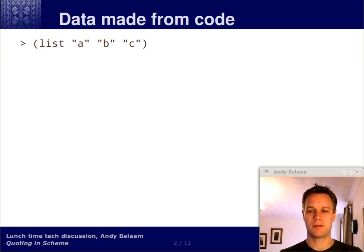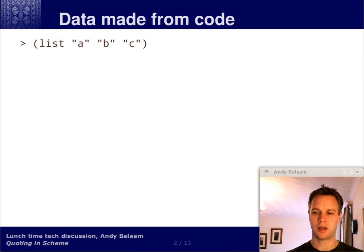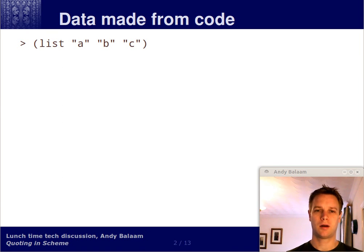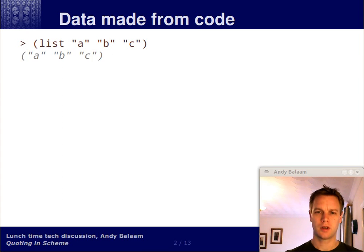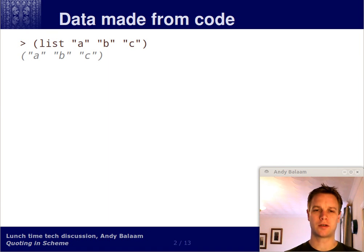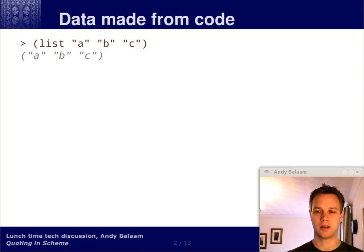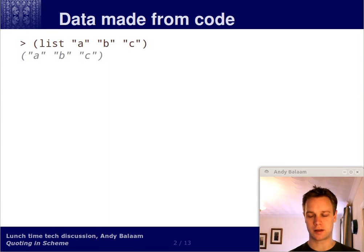Let's start by reviewing how you make data in code in Scheme. Here's some Scheme code. We're running the list procedure and passing three arguments, which are three strings. What you get out of that is a list of three things - the three strings you put in. This is just how you make a piece of data, not a very special piece of data, just data made out of strings.